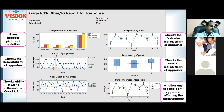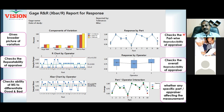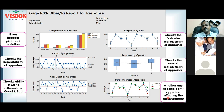Within the measurement error, it is further divided into repeatability and reproducibility, so you get a fair idea of which is higher. The second graph — the R chart — checks the appraiser's repeatability. The X-bar chart checks the ability of your measurement system to differentiate good and bad. The 'response by part' chart checks the part-wise reproducibility of the appraiser. The box plot checks the overall reproducibility of the appraiser. The final plot is also called the interaction plot, which checks whether any specific part-appraiser combination is affecting the measurement system.